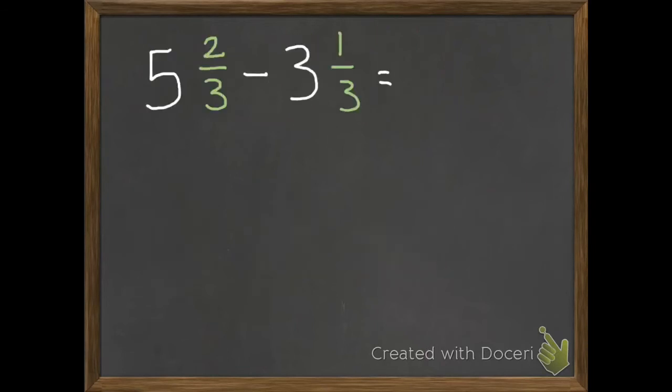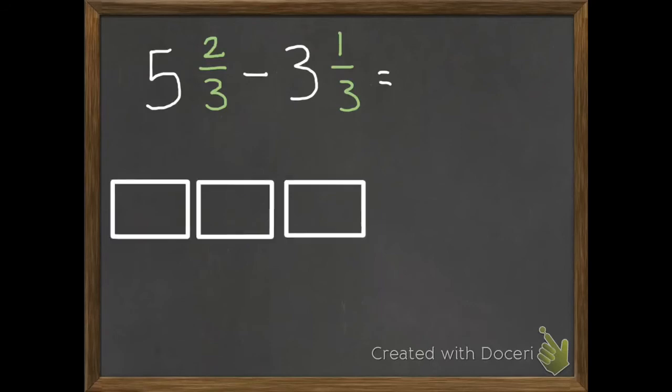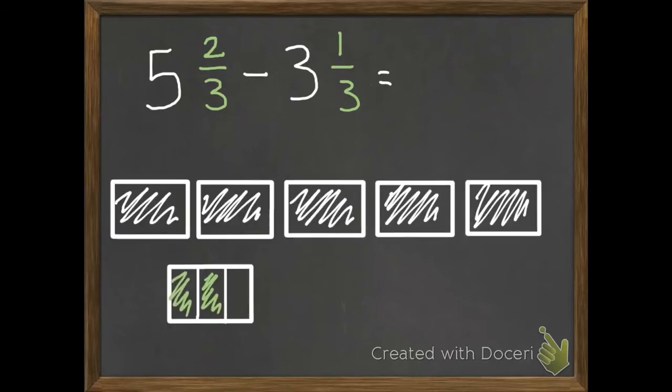Okay, try this one along with me. So first of all, draw 5 holes and then 2 thirds. If you need to pause for a second, you can. And once you have that drawn, we'll continue on. So here are my 5 holes and my 2 thirds.